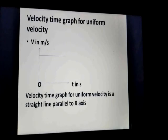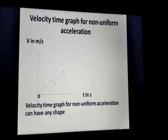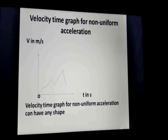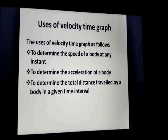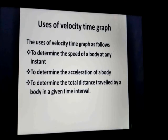The velocity-time graph for uniform velocity is a straight line parallel to the x-axis. For non-uniform acceleration, the graph can have any shape because the object's velocity changes unevenly over time. The uses of the velocity-time graph are: to determine speed at any instant, to determine acceleration, and to determine total distance travelled in a given time interval.